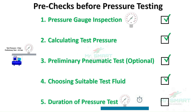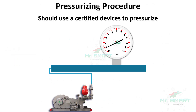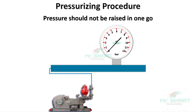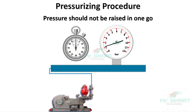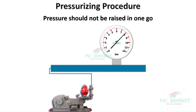Once we are done with all pre-checks, we can proceed with the pressurizing activity. Always use certified pumps or compressors that operate safely during the entire pressurizing process. The pressure should never be raised to the test pressure in one go. Instead, it should be incrementally increased, holding for 10 minutes at each stage. This allows the system to stabilize, helping spot minor leaks or pressure drops before proceeding to the next increment. Once the final test pressure is attained, hold it for the planned test duration and observe any deviation in pressure. When there is no deviation in pressure, your system is reliable and safe to use.